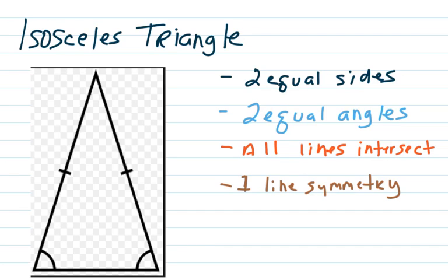Now our next type of triangle is an isosceles triangle. It has two equal sides and two equal angles. And those equal angles are here and here.